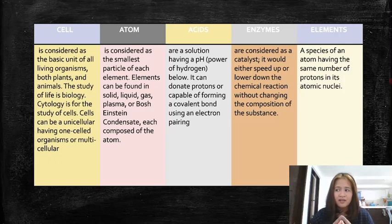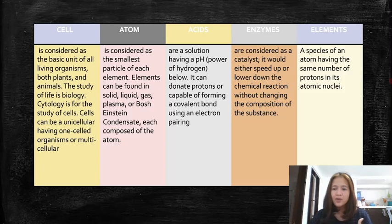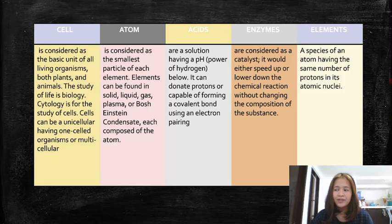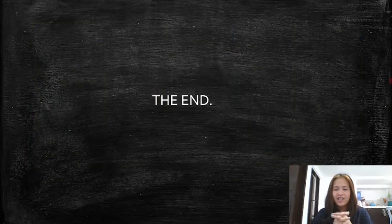An example of enzymes is a group that helps digest fats in the gut. Elements are a species of atom having the same number of protons in each atomic nucleus. Elements are tiny particles that make up matter, and a chemical made up of only one kind of atom is called an element. Elements are very important. And that's it — thank you.